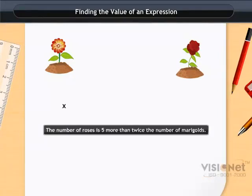Now the number of roses is 5 more than twice the number of marigolds. So the number of roses becomes 2x plus 5.